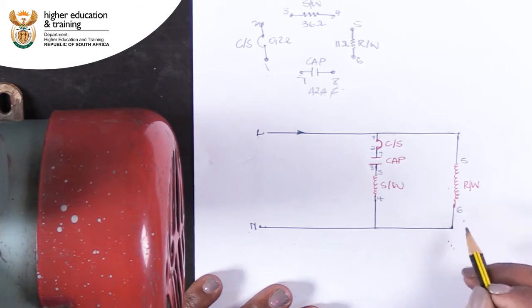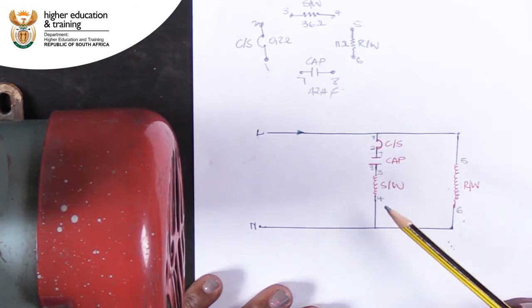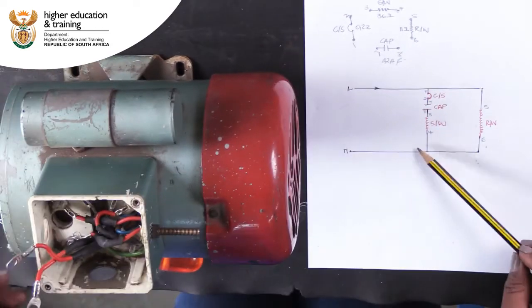Now we can see that to correctly wire the capacitor into the motor, we need to connect it between the centrifugal switch and the start winding. In other words, between points 2 and 3. Therefore, points 2 and 7, and points 8 and 3 must be connected.